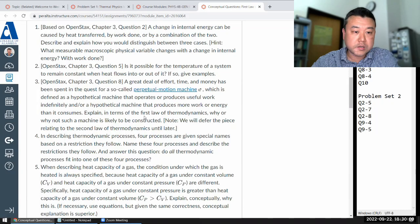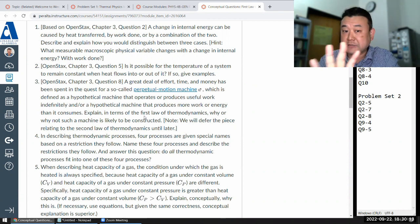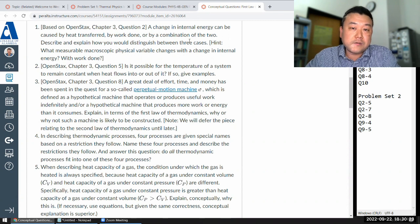As I'm reading through the questions and making a few comments, let me know if there's any specific request. The first question says a change in internal energy can be caused by heat transfer, work done, or a combination of the two. So it's getting at the first law of thermodynamics. Describe and explain how you would distinguish between the three cases.